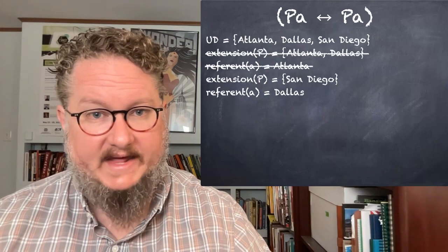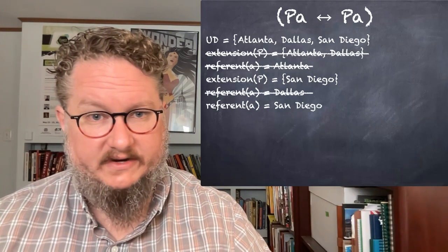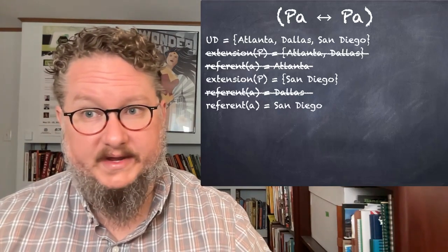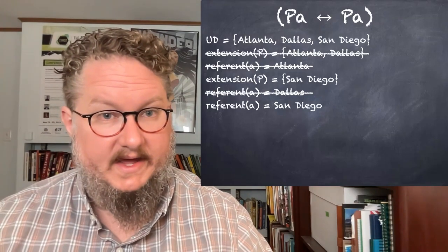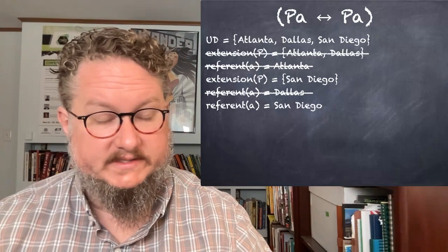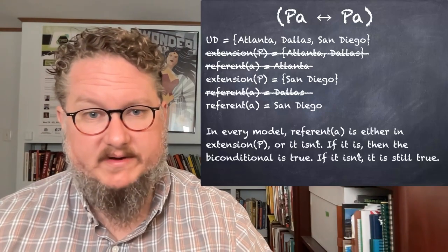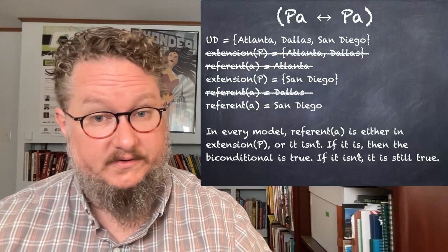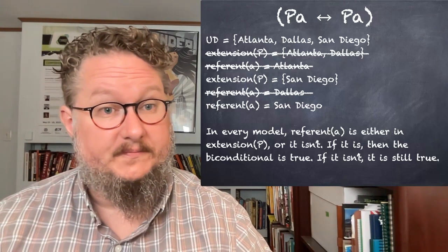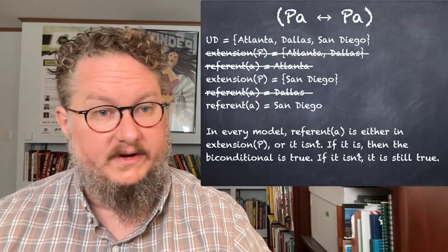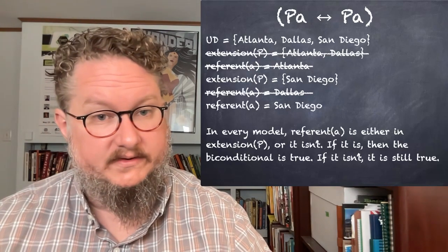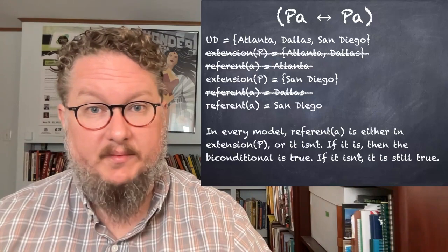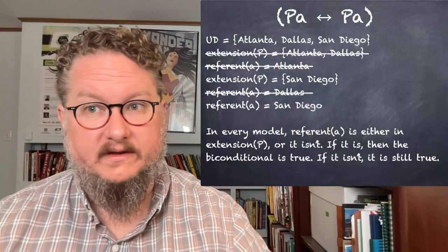If we change the referent of A to Dallas or San Diego, the biconditional remains true. PA ↔ PA looks like a tautology because it is. In every model, the referent of A is either in the extension of P or it isn't. If it is, the biconditional is true; if it isn't, it is still true. To demonstrate semantically that this is a tautology, we have to talk about what's going on in every possible model.